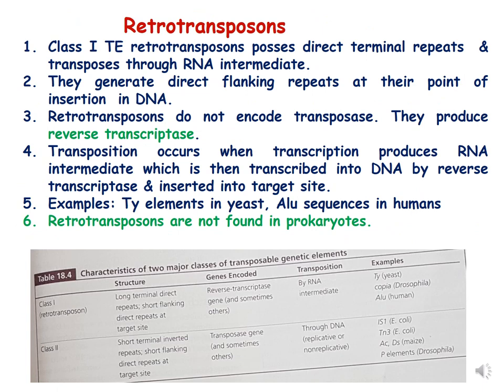Retrotransposons are class 1 transposable elements. They possess direct terminal repeats and transpose through an RNA intermediate. They generate direct flanking repeats at their point of insertion in DNA. Retrotransposons do not encode transposase; instead, they produce reverse transcriptase. Transposition occurs when transcription produces an RNA intermediate, which is then reverse-transcribed into DNA by reverse transcriptase and inserted into the target site.